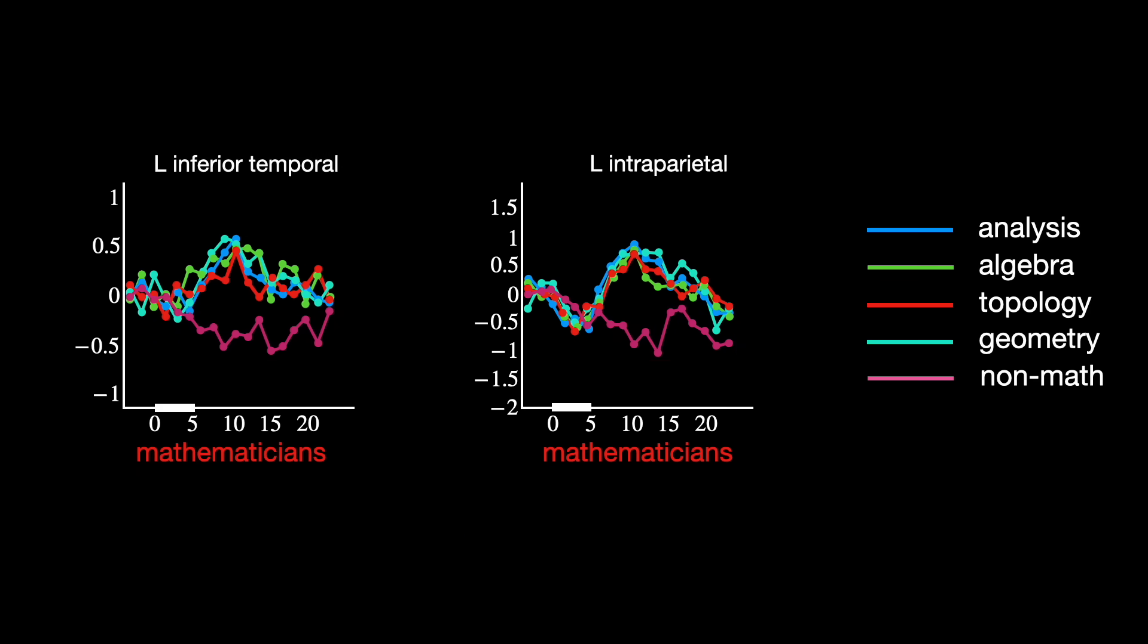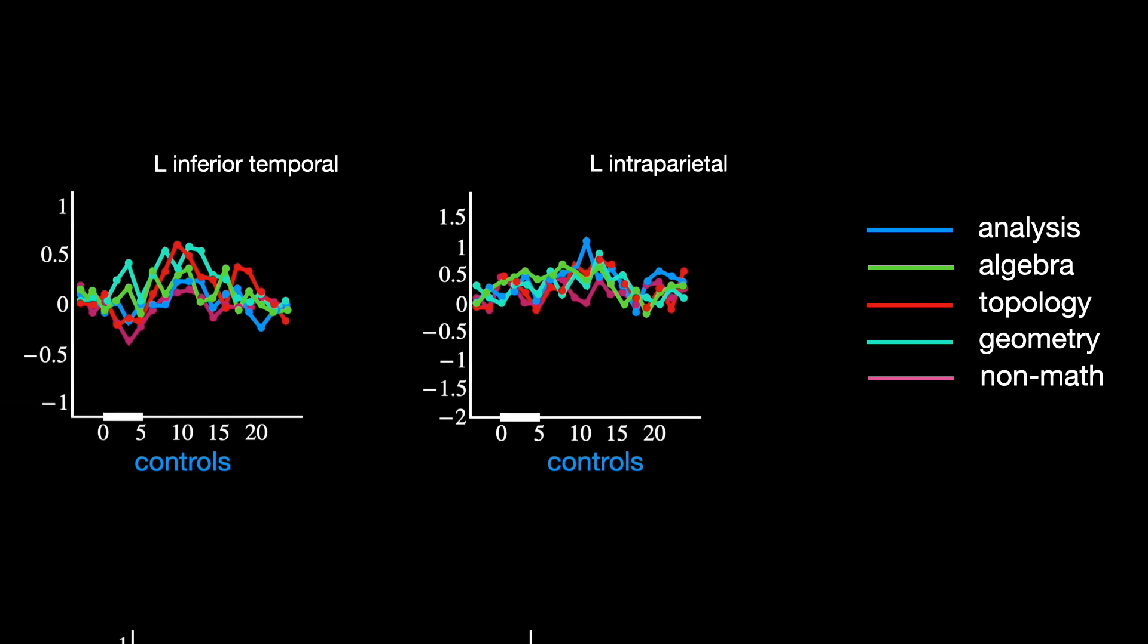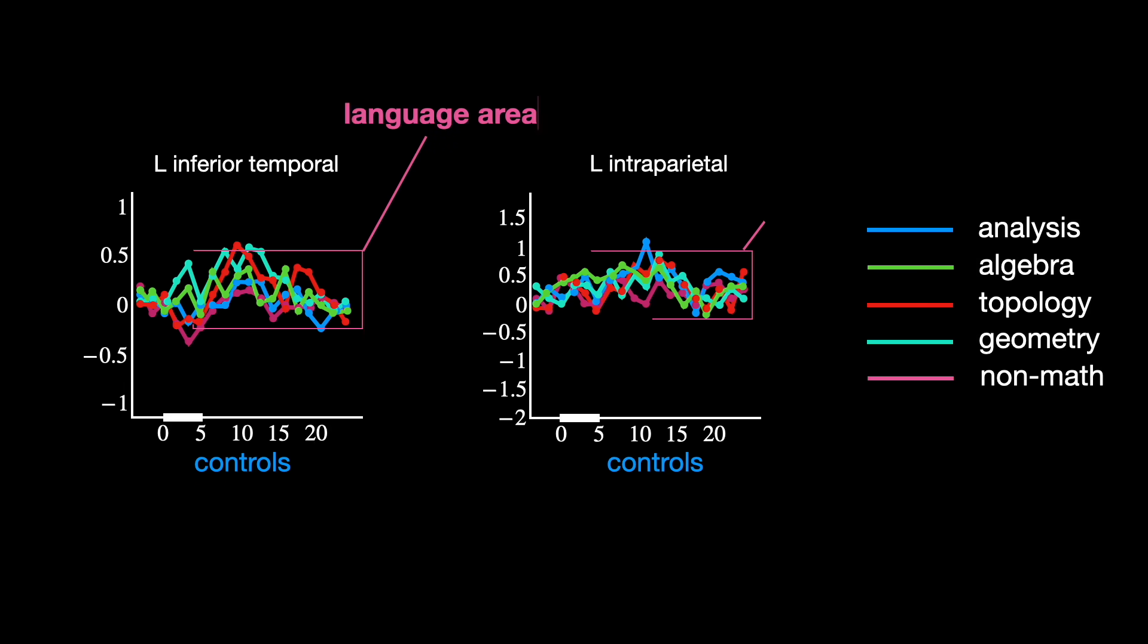In controls, these same regions showed only mild and similar responses to all statements, whether math or non-math, indicating no activation in math-specific areas. So basically, for both math and non-math, the controls lean on the same general purpose, language-heavy areas. That's why the activation looks similar across all topics. They are processing it with the same general reasoning network.